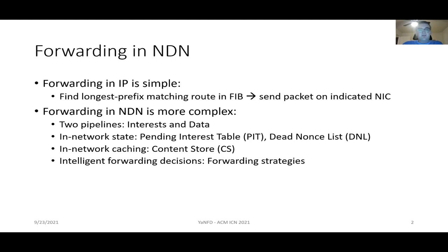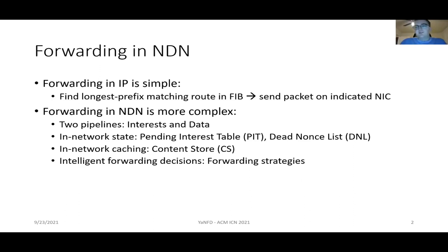Meanwhile, in NDN, forwarding is much more complex. We have two pipelines, one for each type of packet in NDN — interests and data. We have in-network state through the pending interest table and the dead nonce list, and in-network caching through the content store. Beyond this, the forwarding plane of NDN is more intelligent through the use of forwarding strategies, which have logic that can change how a specific interest is forwarded and can be set differently for different prefixes.